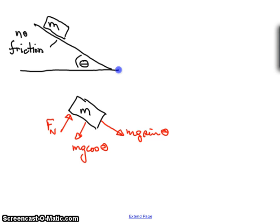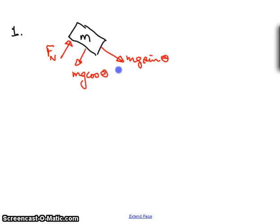So that's the first step. And then we go to the second step. Second step is to write Newton's second law down for both directions. So let's do that.